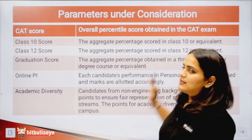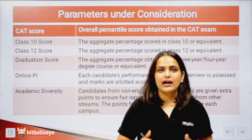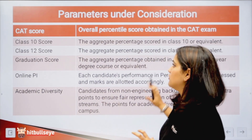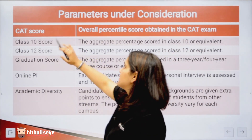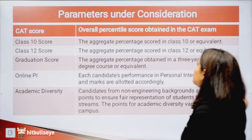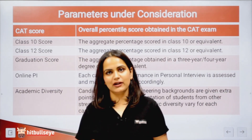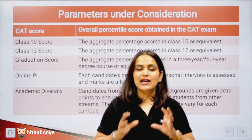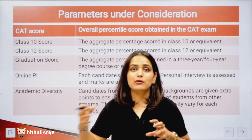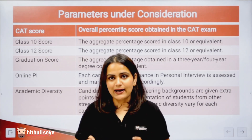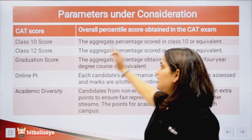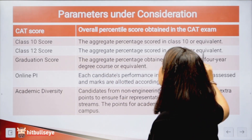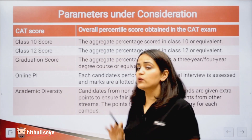The parameters under consideration while evaluating an individual's profile: The CAT score is the very first thing. Your overall percentile score obtained in the CAT exam is the primary factor. You cannot say that if you haven't scored well you'll be able to compensate — you won't. This is the primary thing that will be seen. The second parameter is your Class 10 score — the aggregate percentage scored in Class 10 or equivalent.